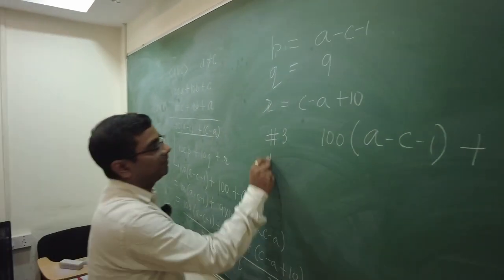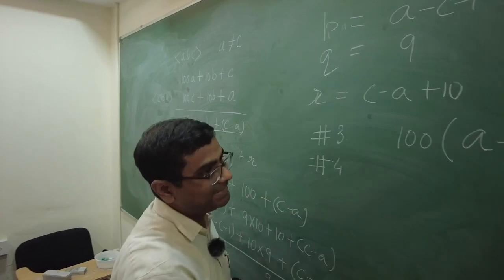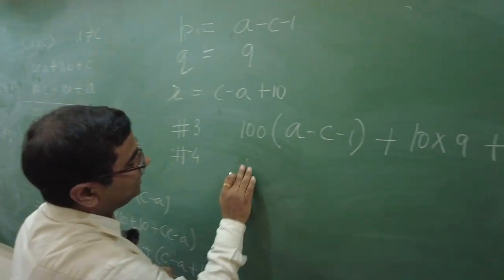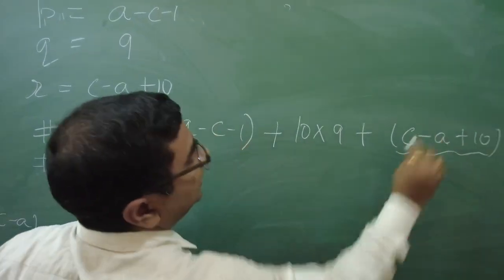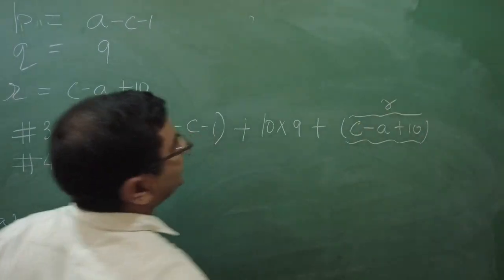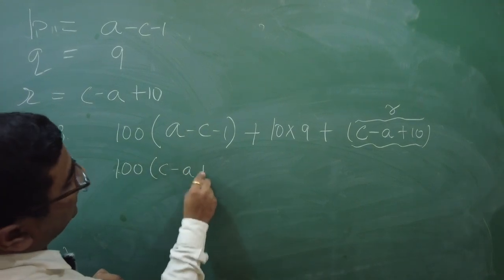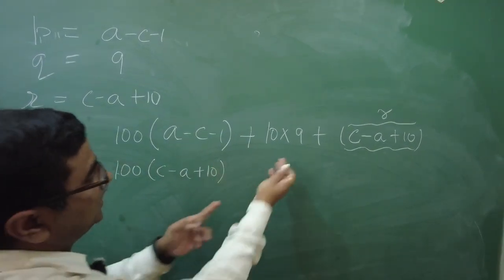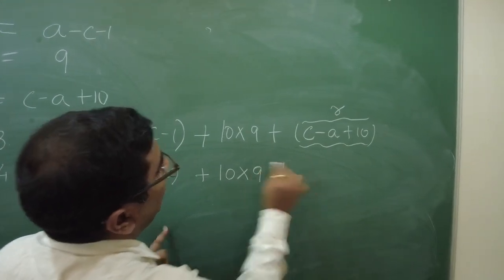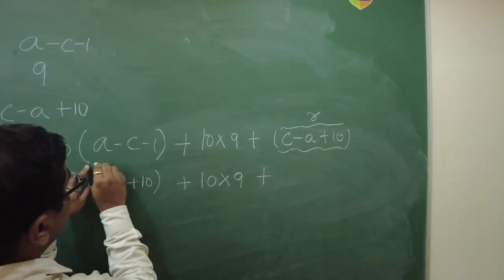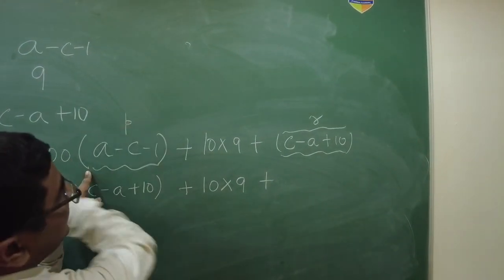Now, reverse the digits. So, number 4. Fourth number is 100 times the R. So, this is my R. Right? This is R. So, 100 times that R, which is C minus A plus 10. Then, this same number, because Q remains as it is. And, the unit's place will be my P now.